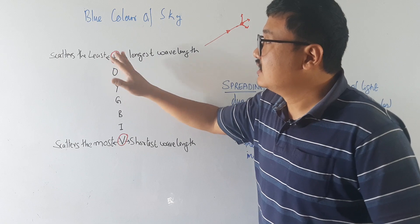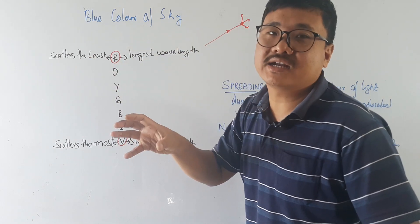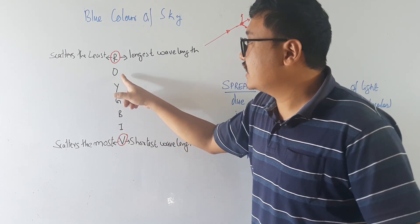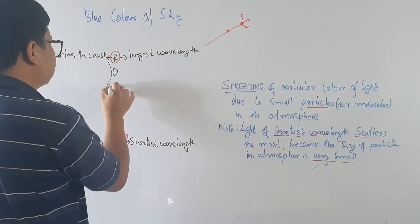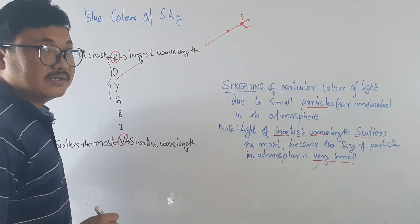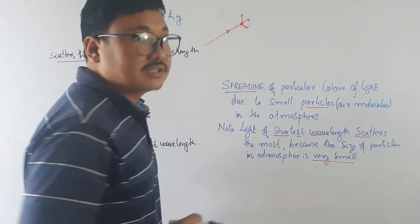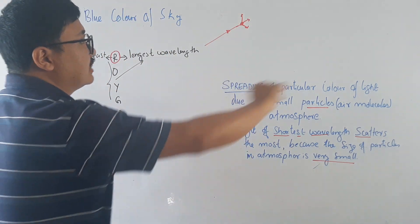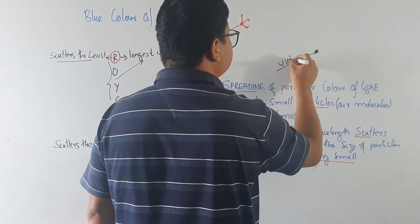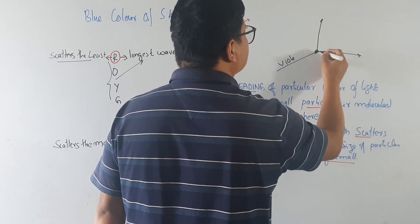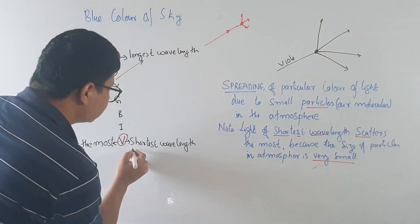We will come back to that. First, red has the longest wavelength and scatters the least — it scatters very little. Yellow also scatters, orange also scatters, but very little, because all of these have longer wavelengths than indigo and violet. So they scatter the least. Now, if we talk about violet — violet scatters a lot, it scatters the most, because it has the shortest wavelength.